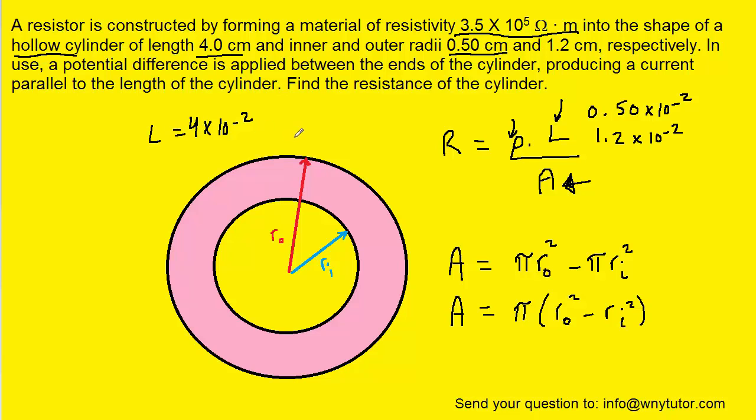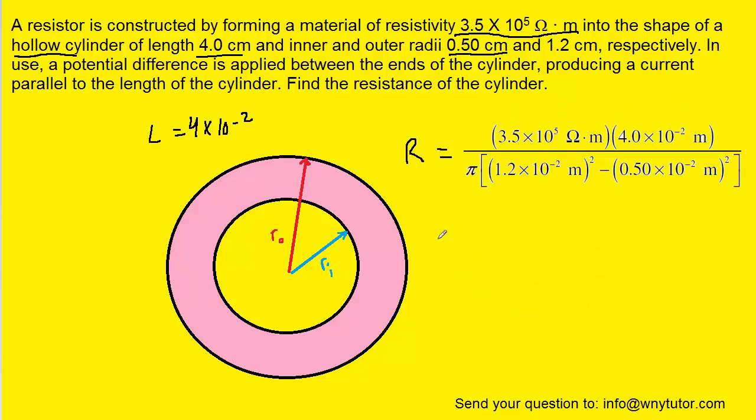So with all those known values, we can plug into our resistance formula. And when we carefully plug that into our calculators, we get a resistance of approximately 3.7 times 10 to the power of 7 ohms. If we had to convert that into mega ohms,